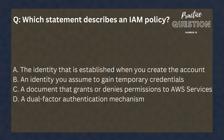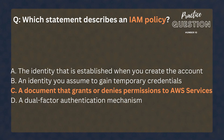Which statement describes an IAM policy? The identity established when you create the account. An identity you assume to gain temporary credentials. A document that grants or denies permissions to AWS services. A dual factor authentication mechanism. IAM policies are just documents that define allow and deny statements that shape your permissions for what you can and cannot do on AWS resources.